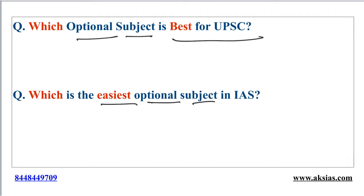In this context, optional subjects like philosophy, anthropology, sociology, political science, geography, and history are considered as relatively doable and relatively easier optional subjects.